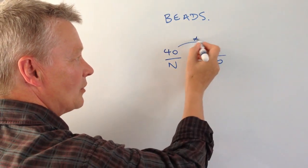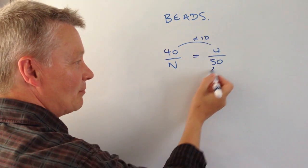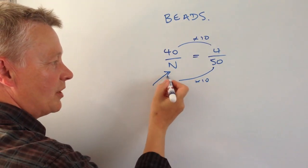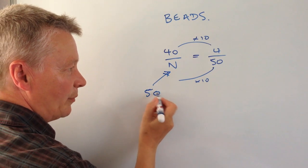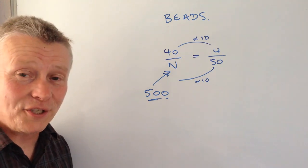So really, all we're saying is if we multiply this by 10 to make 40, then I'm going to multiply the bottom by 10, and if I do that, it means the original population would have been 50 times 10, which is 500. And that will actually answer the question.